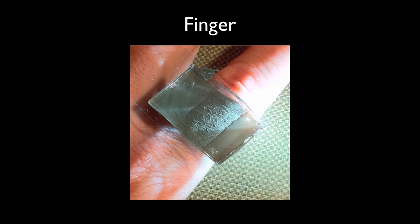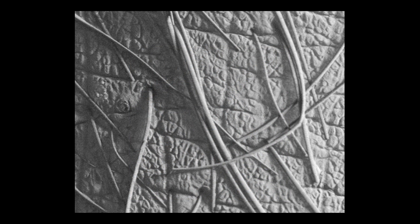GelSight reveals microscopic surface structure that is difficult to see under ordinary circumstances. For example, you can see how skin varies from the finger to the foot.